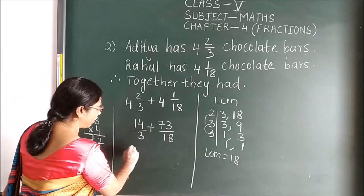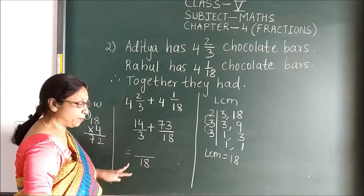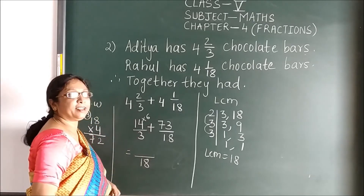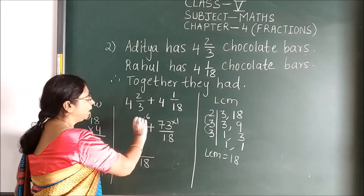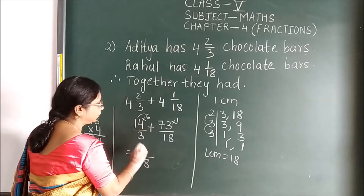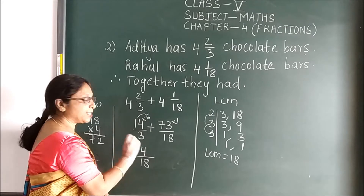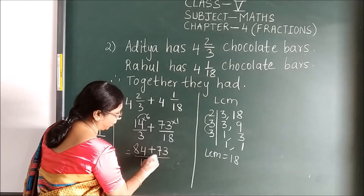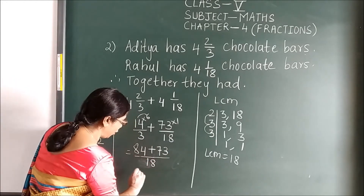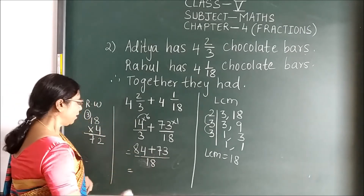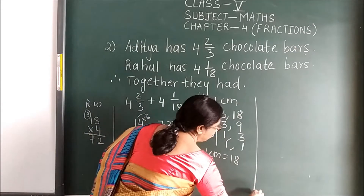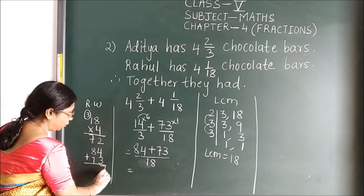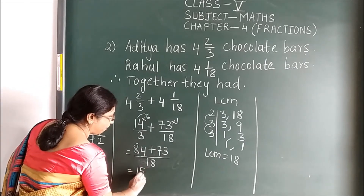Write the LCM 18 as denominator. For 14/3: 3 × 6 = 18, so multiply numerator by 6 — 14 × 6 = 84. For 73/18: 18 × 1 = 18, so multiply numerator by 1 — 73 × 1 = 73. Now add: 84 + 73 = 157. So you get 157/18.